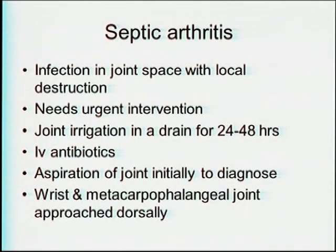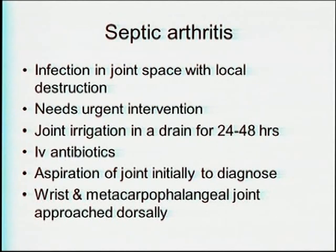Coming to specific infections — septic arthritis is an infection of the joint space with local destruction, requiring urgent intervention as it is an emergency. You need to aspirate the joint early to diagnose the exact causative organism, send for cultures, and then use targeted antibiotics. Joint irrigation and a drain should be maintained for 24 to 48 hours. Wrist and metacarpophalangeal joints should be approached dorsally.